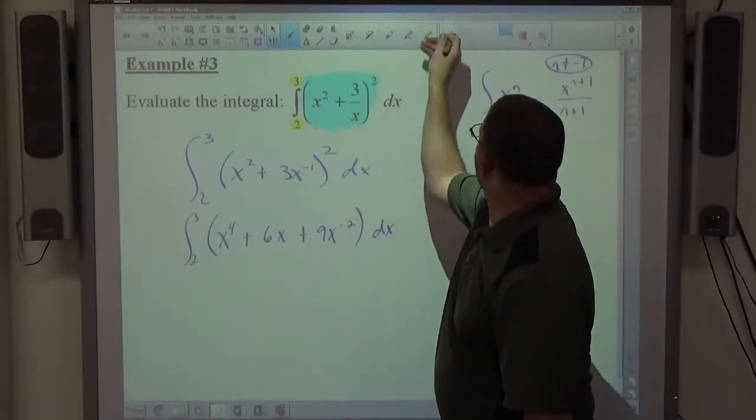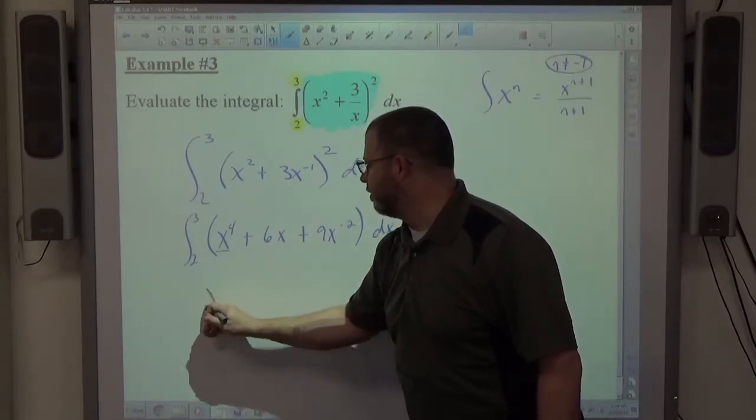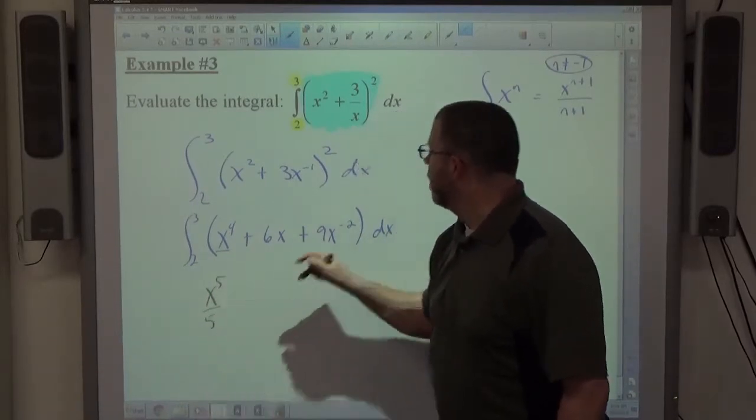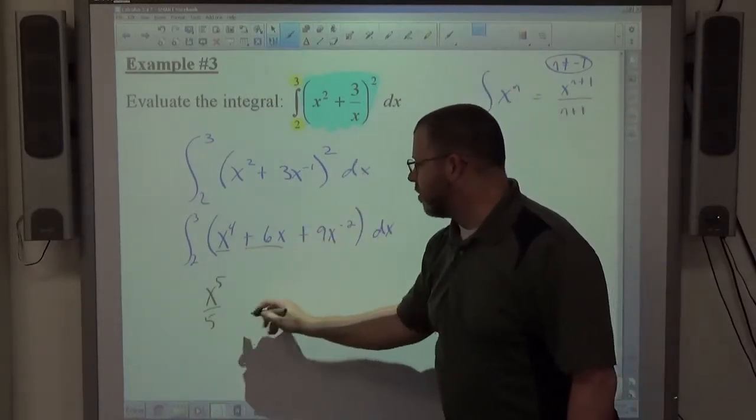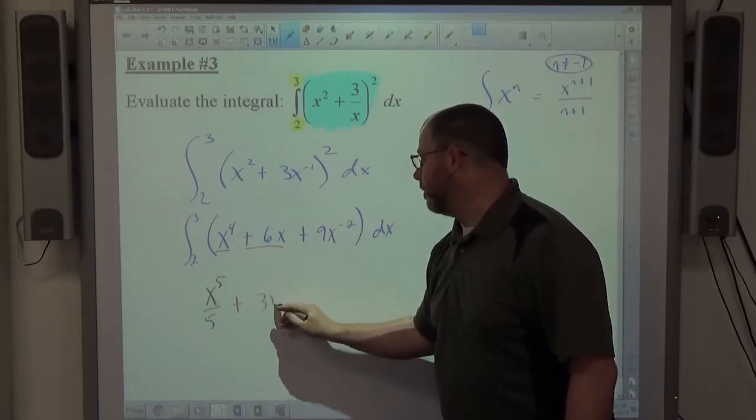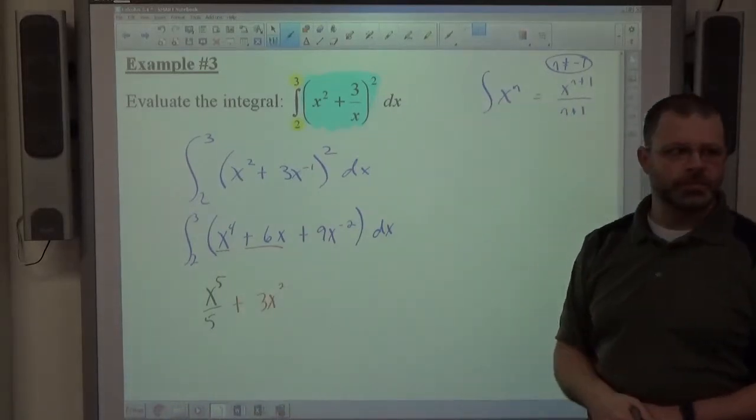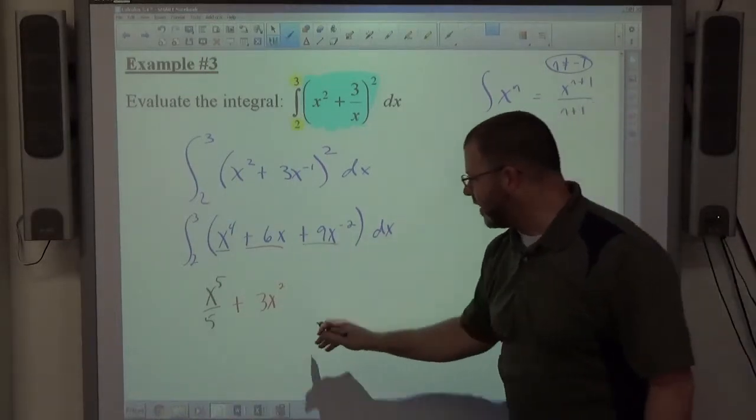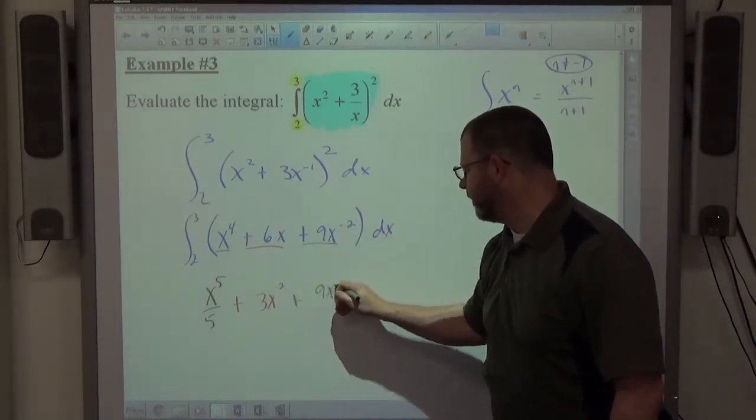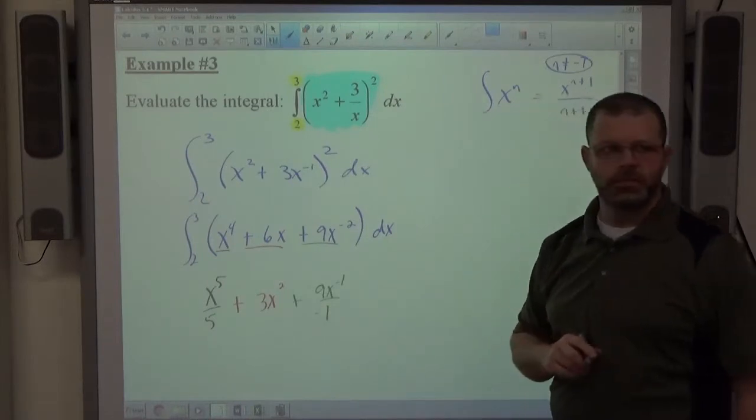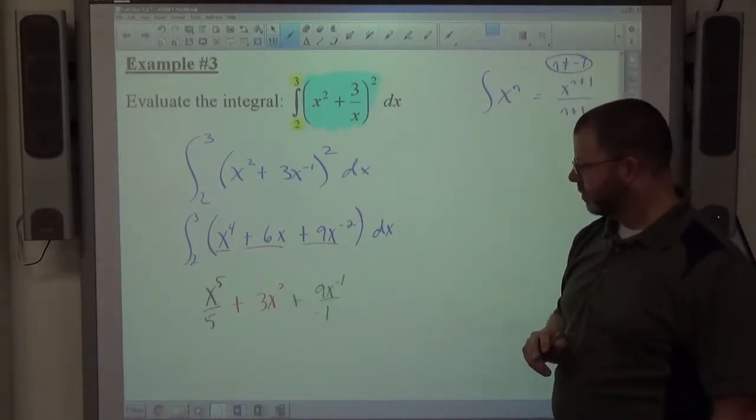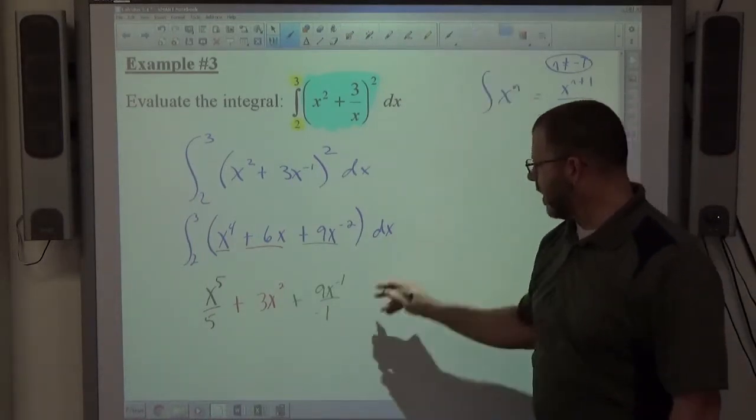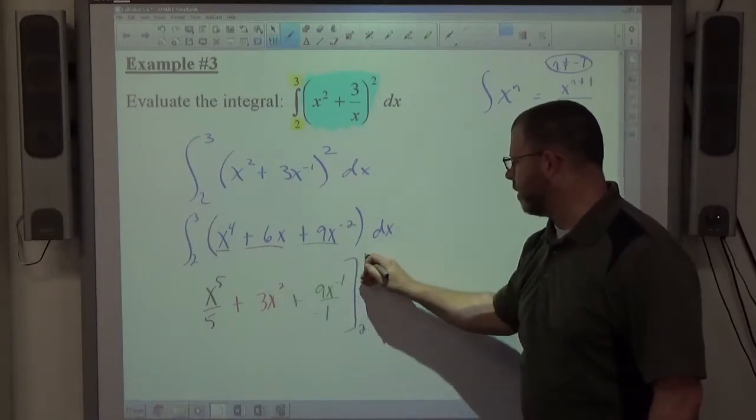So this term here, the anti-derivative is x to the fifth over 5. This term here, the anti-derivative is 6x squared over 2, better known as 3x squared. And this term here, the anti-derivative is 9x to the negative 1 over negative 1. And we're integrating that, starting at 2, going up to 3.